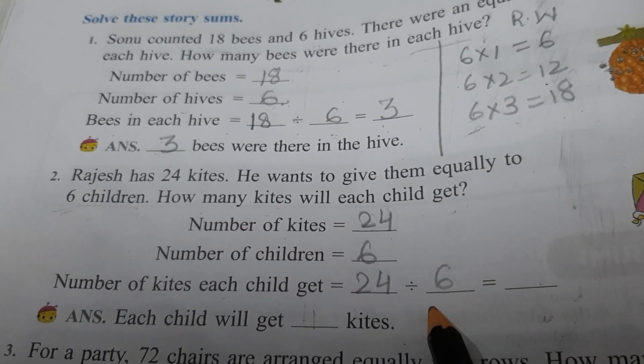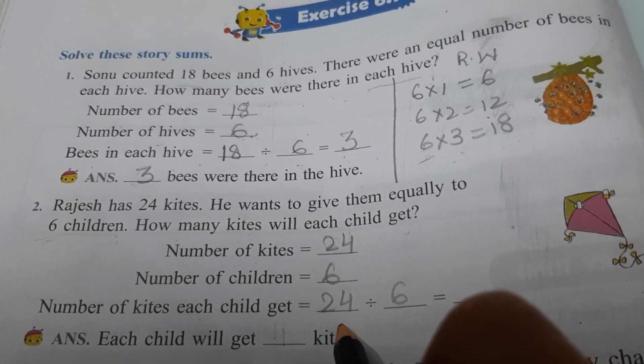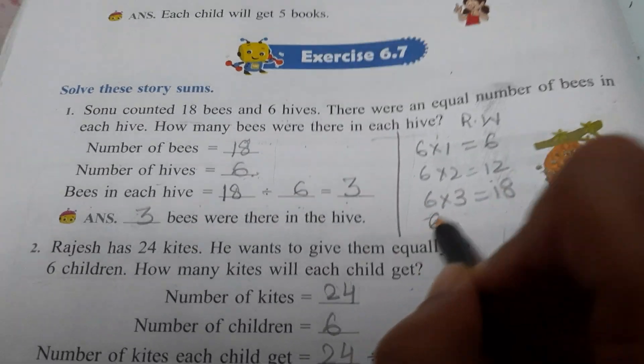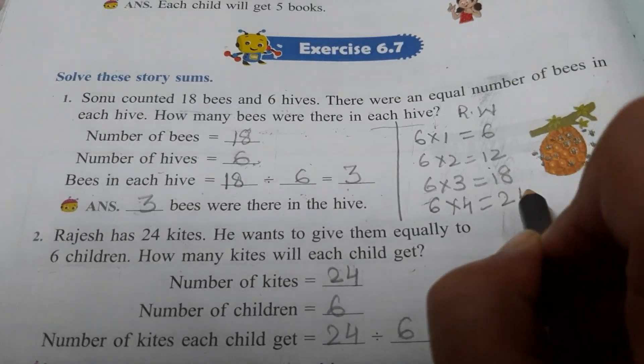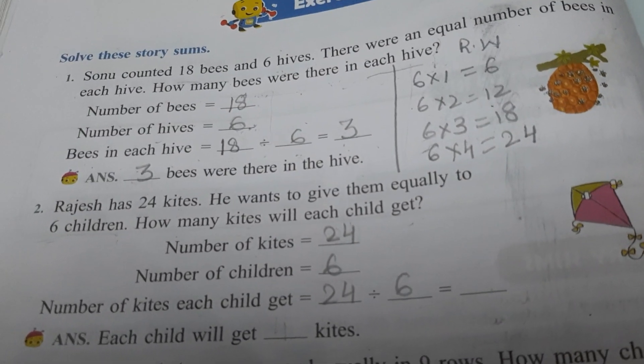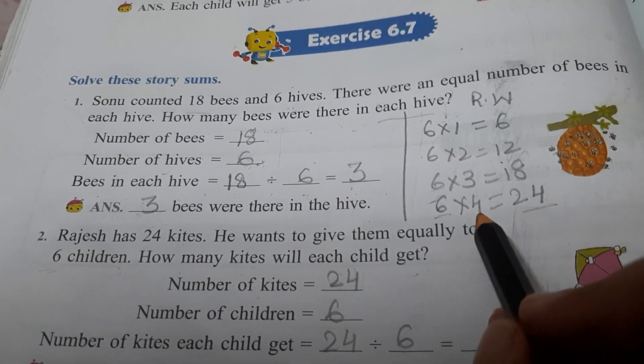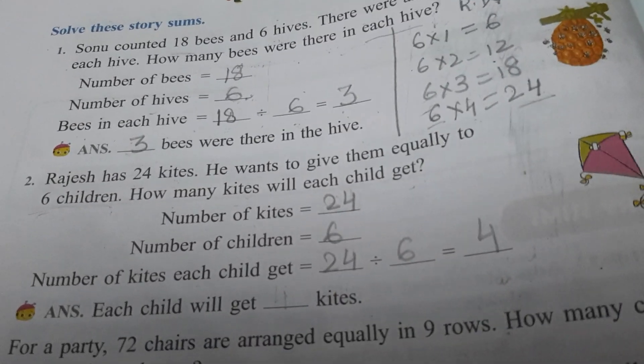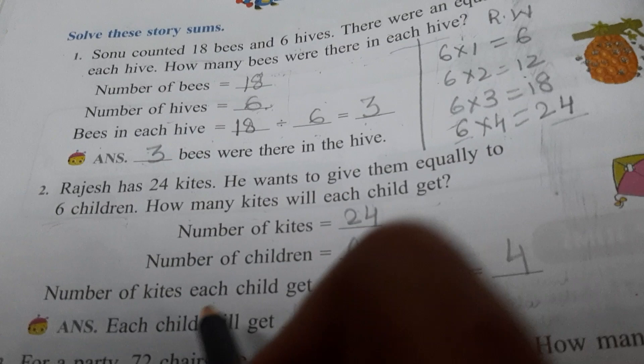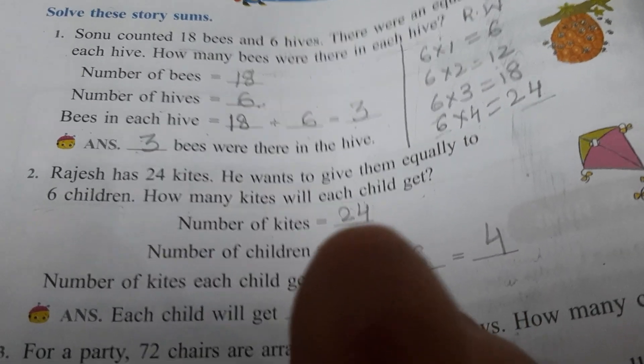Again, we will recall six table. We have already written here. But now, dividend is 24. So we will write six table till we get 24. So 6 fours are 24. So this is divisor, this is dividend. Now it means four is the quotient. 6 fours are 24. So it means each child will get how many kites? Four kites. This is your answer.